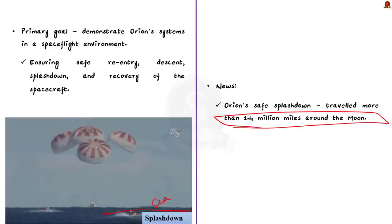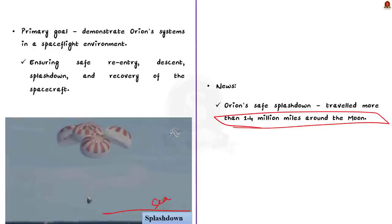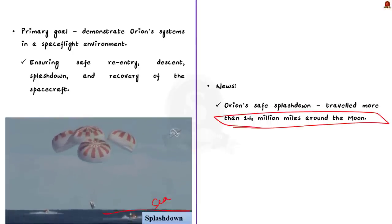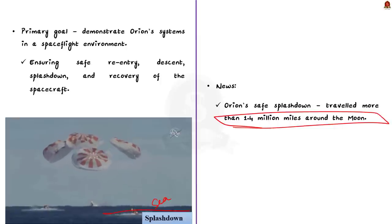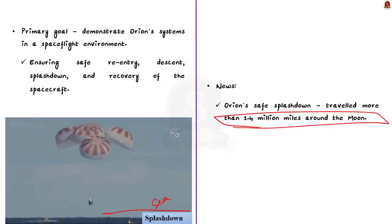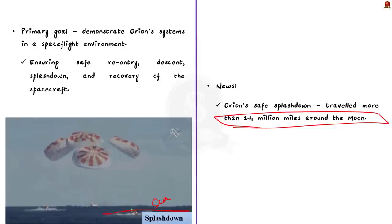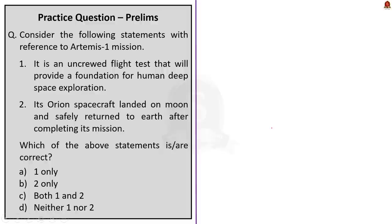Orion traveled more than 1.4 million miles on a path around the moon and returned safely to Earth after a record-breaking mission. After this successful mission, the second flight, Artemis 2, will take a crew on a different trajectory and test Orion's critical systems with humans aboard. Even though this is not an Indian mission, there may be a Prelims question about it.